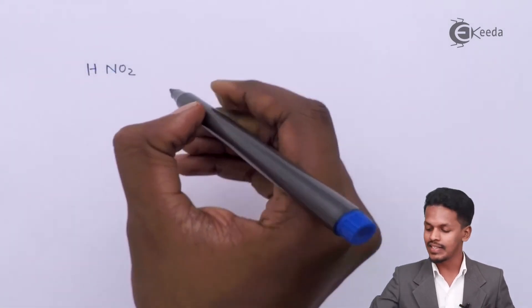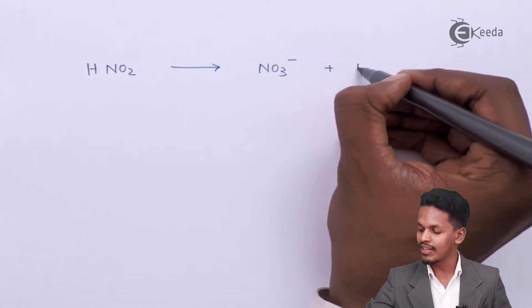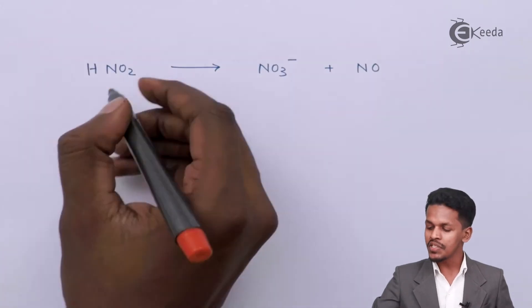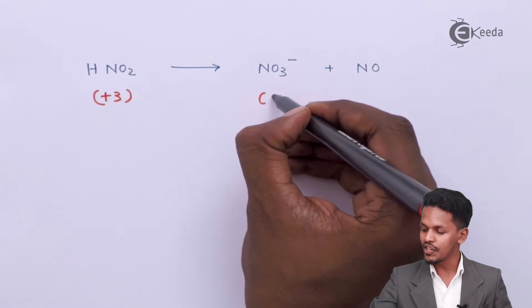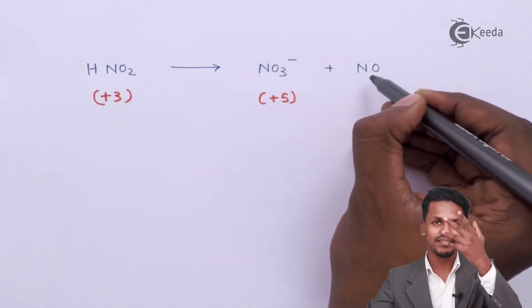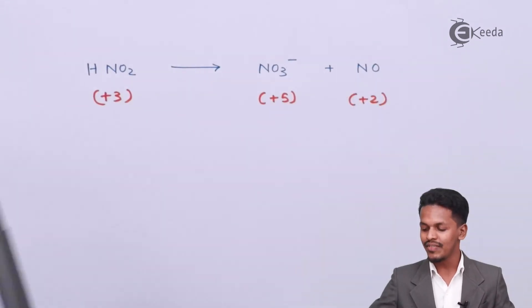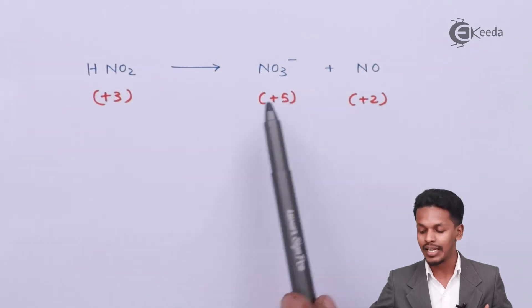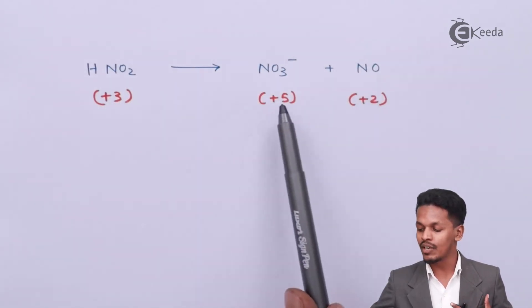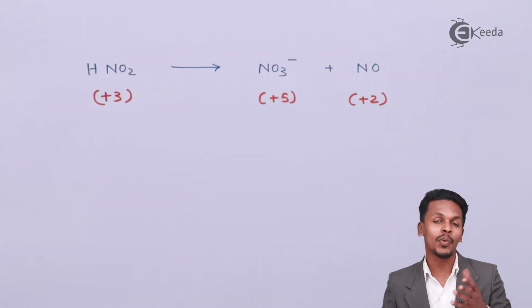Another example: consider HNO₂, nitrous acid. When nitrous acid undergoes a reaction, it forms nitrate ion NO₃⁻ along with nitric oxide NO. The oxidation state of nitrogen in HNO₂ is +3. The nitrate ion has an oxidation state of +5 for nitrogen, and nitric oxide has an oxidation state of +2 for nitrogen. So the same element, nitrogen, is exhibiting two different oxidation states — one undergoing oxidation and the other undergoing reduction — making this a disproportionation reaction.